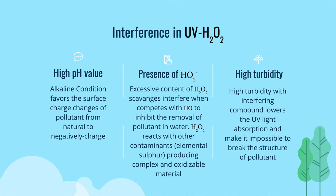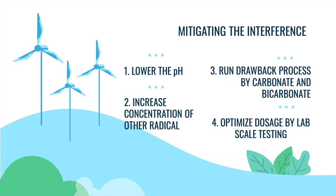All of these interferences can be mitigated by several methods. The first is by lowering the pH value of the water to reduce the alkaline condition. The second is by increasing the concentration of other radicals slightly to avoid interruption during the process. The third is to counter the presence of hydroperoxyl radicals as inhibitors by using carbonate and bicarbonate, which act as scavengers to the hydroperoxyl radicals in the natural system. The last method is optimization of dosage by lab-scale testing from each water source to ascertain the ideal dose of hydrogen peroxide, since excessive dosing will cause major interference by producing complex and oxidizable materials.